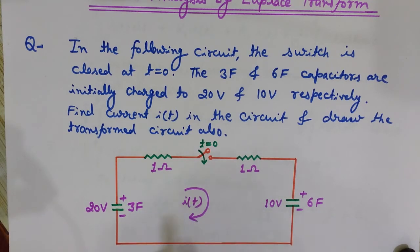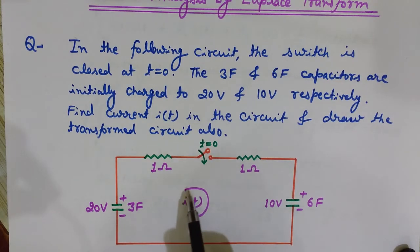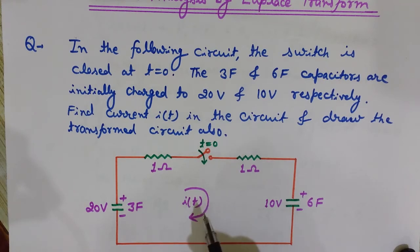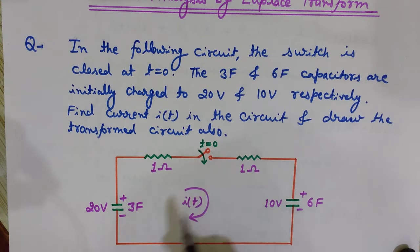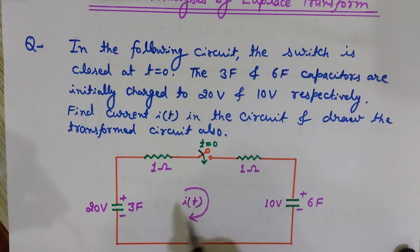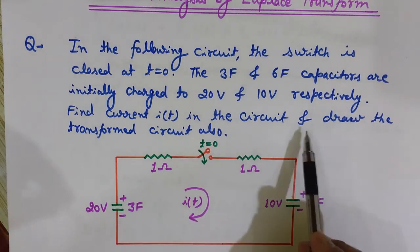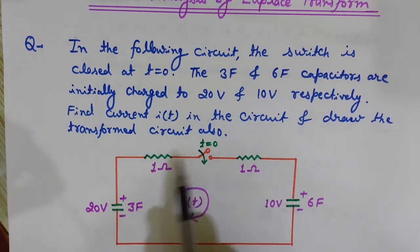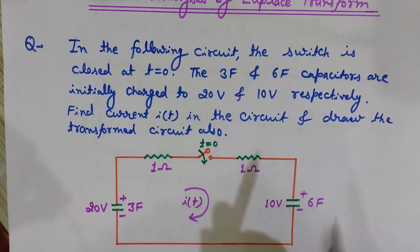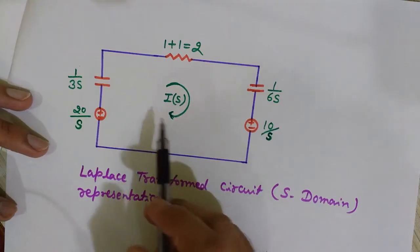We will solve this problem by first writing the KVL equation, then converting it into the S-domain by taking the Laplace transform. In the end, we will take the inverse Laplace transform to find the current I(t). We will also draw the Laplace transformed circuit — the S-domain representation of the circuit.